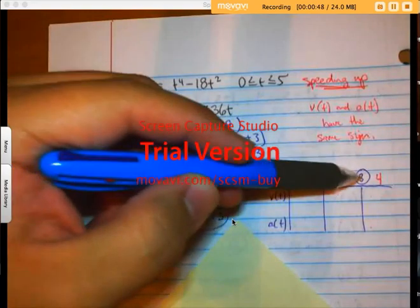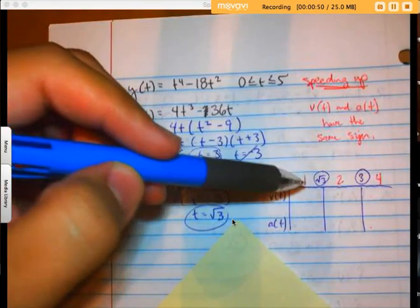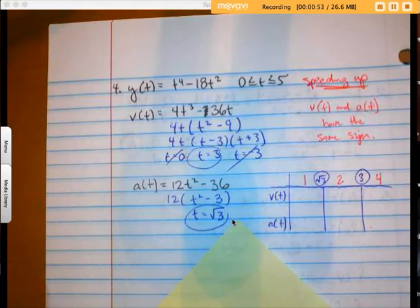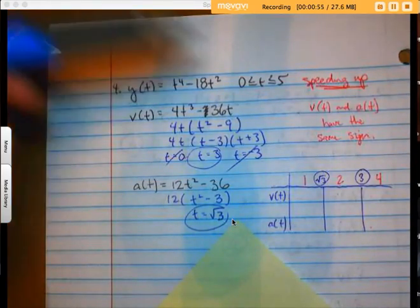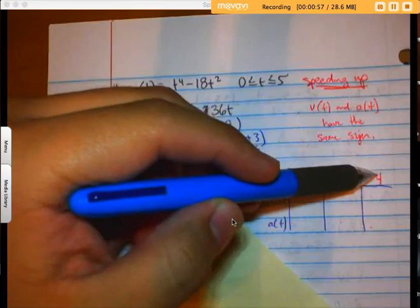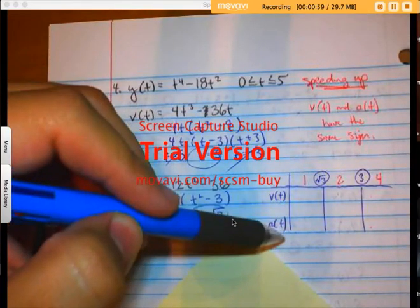the square root of 3 and 3 indicated here because I'm gonna pick points before and after the square root of 3 and 3. So I'm gonna pick 1, 2, and 4, plug them into these two functions, and determine whether...